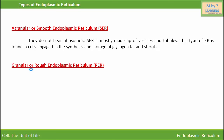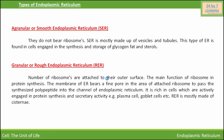Next is rough endoplasmic reticulum. A number of ribosomes are attached to its outer surface. The main function of ribosomes is protein synthesis. The membrane of endoplasmic reticulum bears fine pores in the area of attached ribosomes to pass the synthesized polypeptide into the channel of endoplasmic reticulum. It is rich in cells which are actively engaged in protein synthesis and secretory activities, for example plasma cells and goblet cells. Rough endoplasmic reticulum is mostly made up of cisternae. This is all about endoplasmic reticulum.